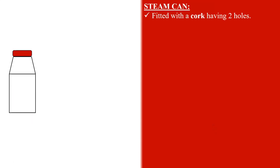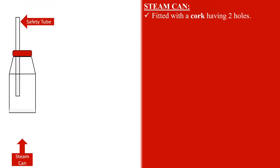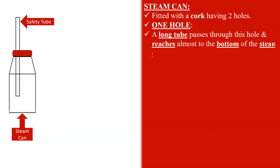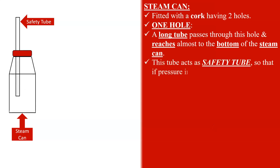The apparatus used for steam distillation on laboratory scale consists of a steam can. This steam can is fitted with a cork that has two holes. In one hole, a long safety tube is passed that reaches almost to the bottom of the steam can. This tube acts as a safety tube so that if the pressure inside the steam can is too much, it is relieved by forcing water out of it. When steam starts coming out from the safety tube, it indicates that the steam can is almost empty.